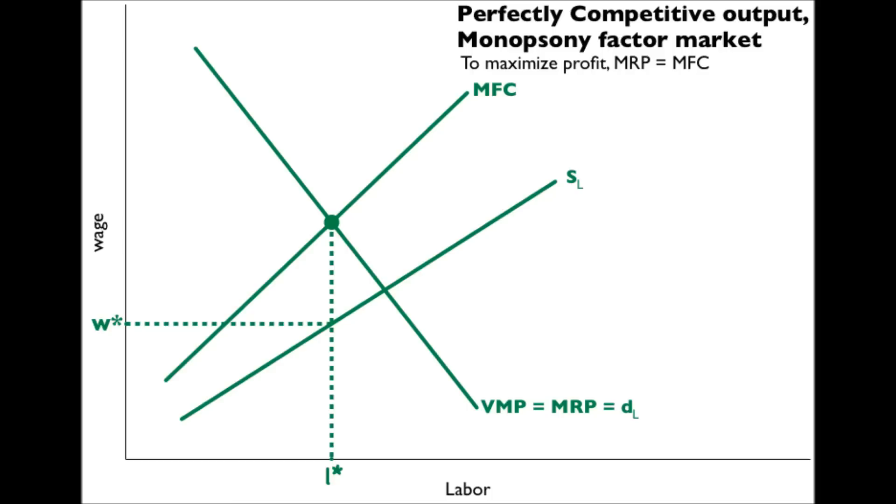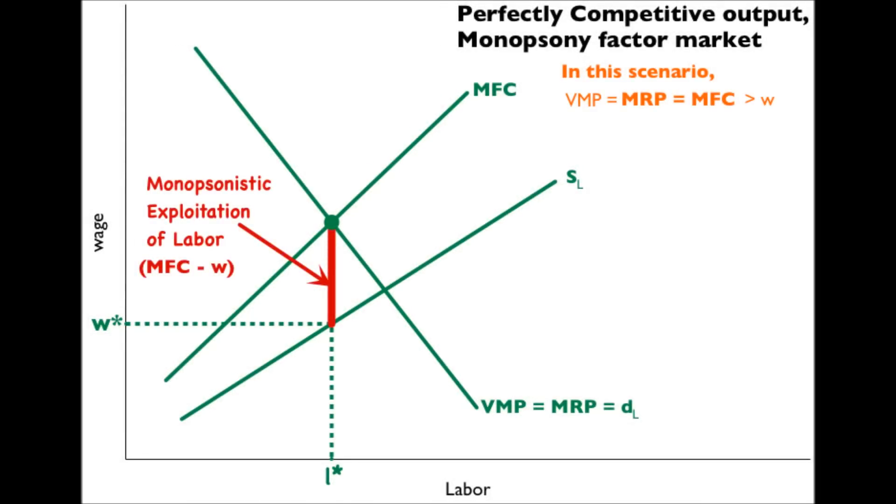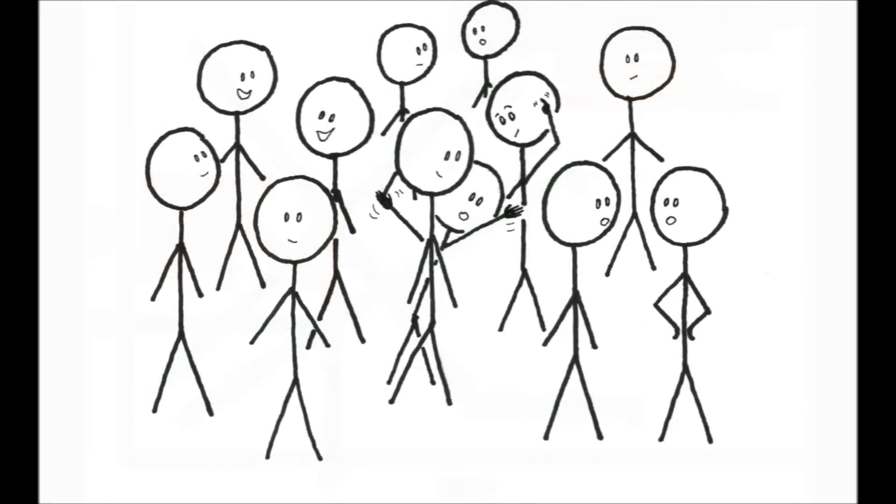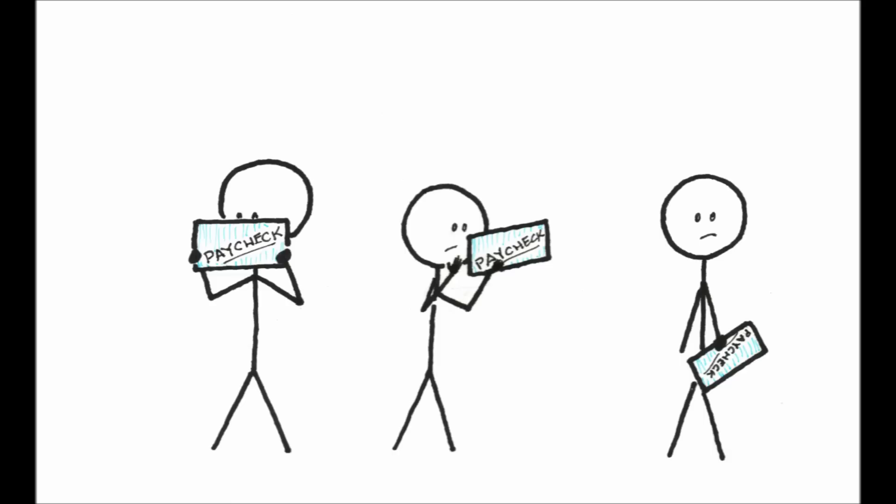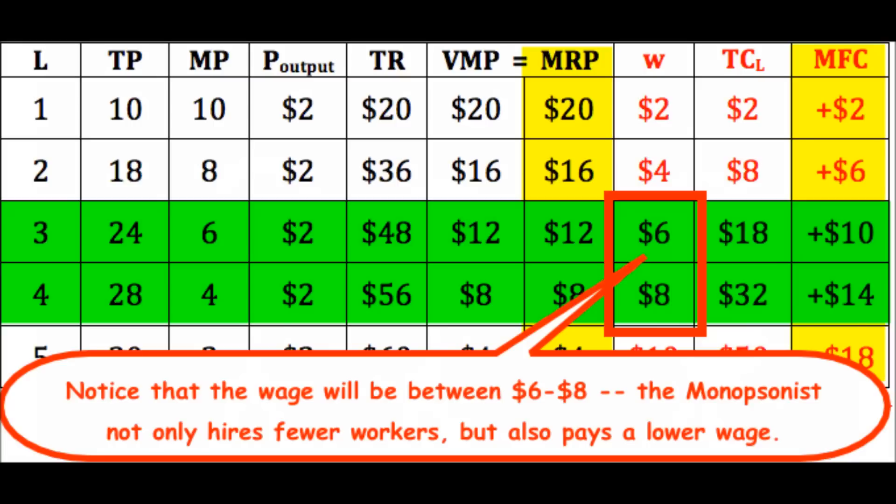Because W-star is less than the market value of the output added by this last worker hired, there is monopsonistic exploitation of labor. In the end, the monopsonistic employer hires fewer workers and at a lower wage than a perfectly competitive hirer.